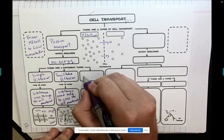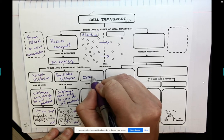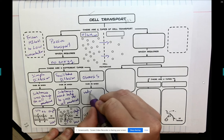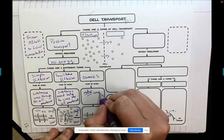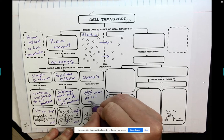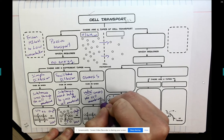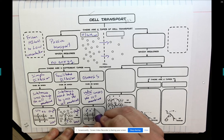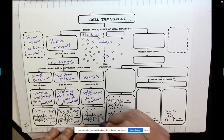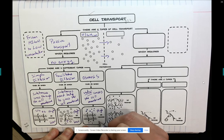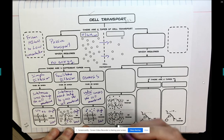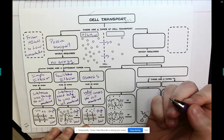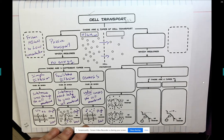The third type of passive transport is osmosis. This is when water crosses the cell membrane. From an area of high concentration to an area of low concentration. And I'm going to switch to a different color. Let's do orange.